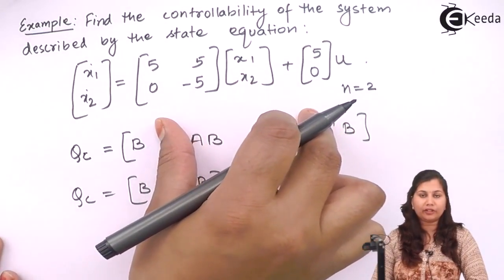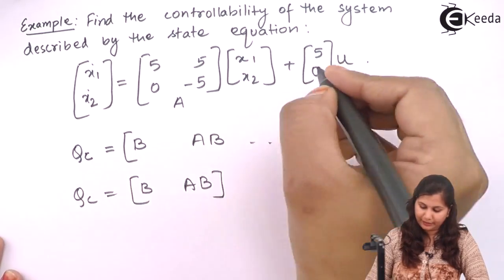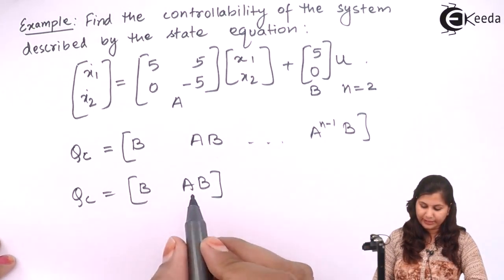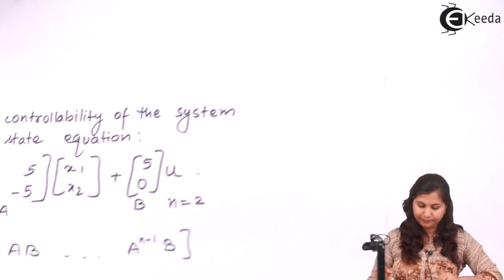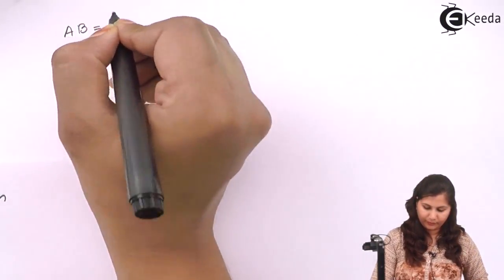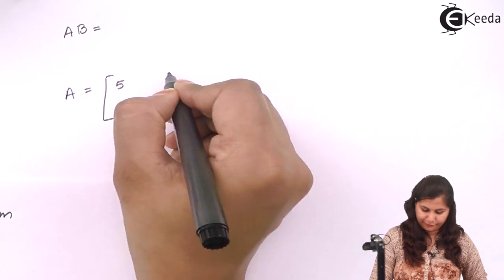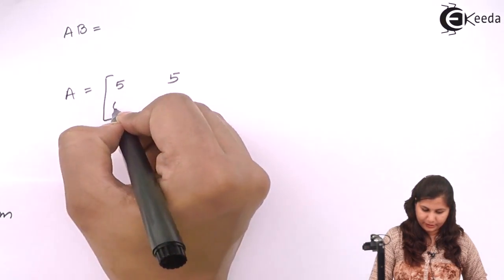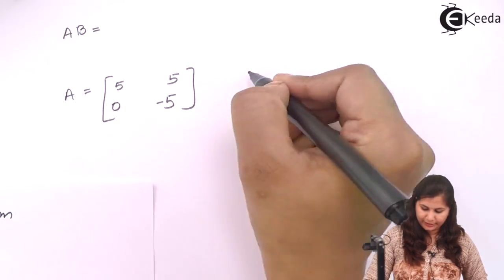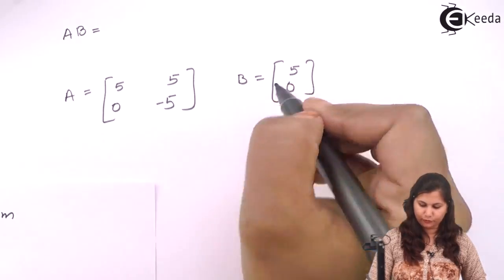The state equation is given to us, so here is the A matrix and the B matrix. A is given as [[5, 5], [0, -5]] and B is [5, 0]. So AB will be the multiplication of these two matrices.